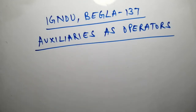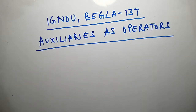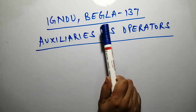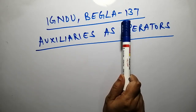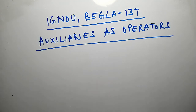Welcome to the Sharing Knowledge channel, this is Ayesha. In this video I am going to explain English course BEGLA 137, Chapter 10 or Unit 10 — specifically the last topic, Auxiliaries as Operators. After completing this, the next video will cover Unit 11. In the previous video I explained complex verb phrases. Now let's look at some special and important features of auxiliaries — where to use them and where to place them in a sentence.